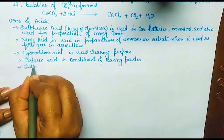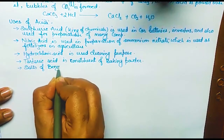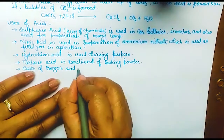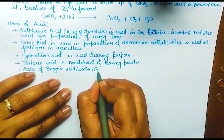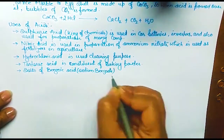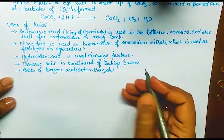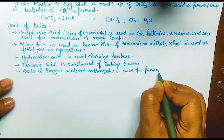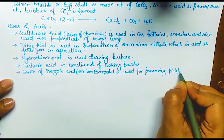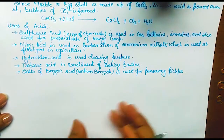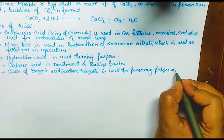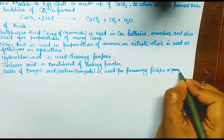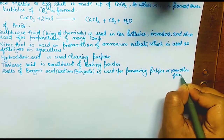The salt of benzoic acid — sodium benzoate — is used as a food preservative. It helps preserve pickles, jams, jellies, and other food items for one to two years.